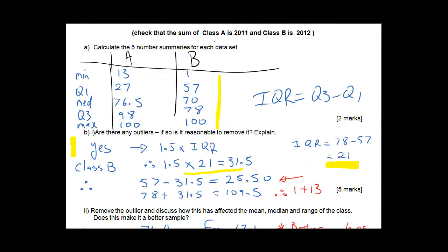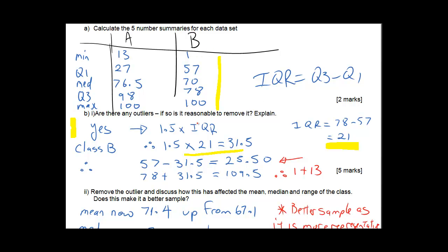So now the next part is are there any outliers and is it reasonable to remove them? What I've done is I've looked at class B because I can see that there's a massive range there. And we're going to use the formula of 1.5 times the interquartile range. The interquartile range is Q3 take away Q1. So I'm looking at class B here. My Q3 is 78 and my Q1 is 57. So therefore 21 is that number. So then we grab that 21 and we times it by 1.5.